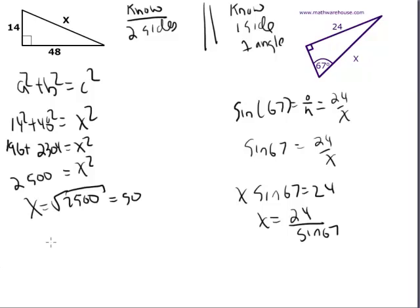And x equals 24 divided by sine of 67, which I'm going to round to the nearest integer. It will give us 26. Alright, we're just now implementing our rule. If we know two sides, Pythagorean theorem. If we know one side and one angle, SOHCAHTOA.